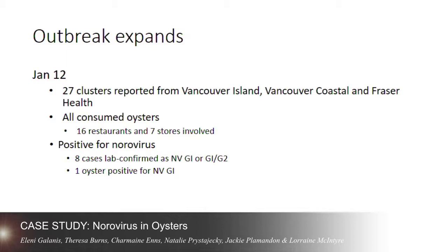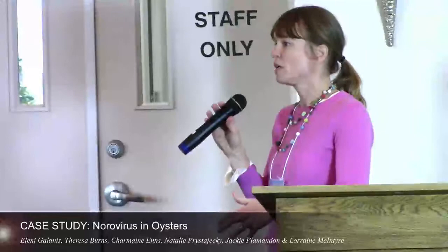We now had positives for norovirus — eight human cases were lab-confirmed as norovirus genogroup 1, or genogroup 1 and 2 — and we finally had an oyster that was positive for norovirus G1. Communities with little to no media attention around the Tofino outbreak were also reporting cases. There were no other common sources of illness, and these cases did not have contact with other ill people, so the evidence was now much stronger that the oysters were the source.